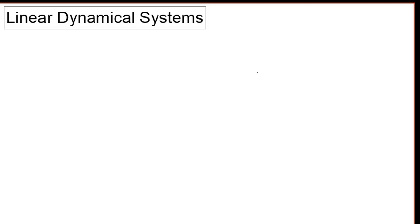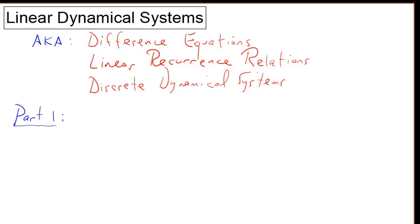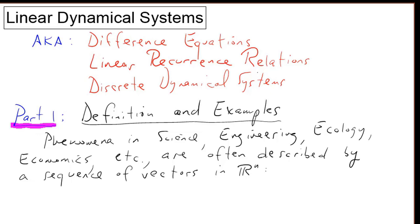This video is about linear dynamical systems. We'll look at the meaning and develop an example in detail. Other names for linear dynamical systems are difference equations, linear recurrence relations, and discrete dynamical systems. In part one, we'll look at definitions and examples of linear dynamical systems.